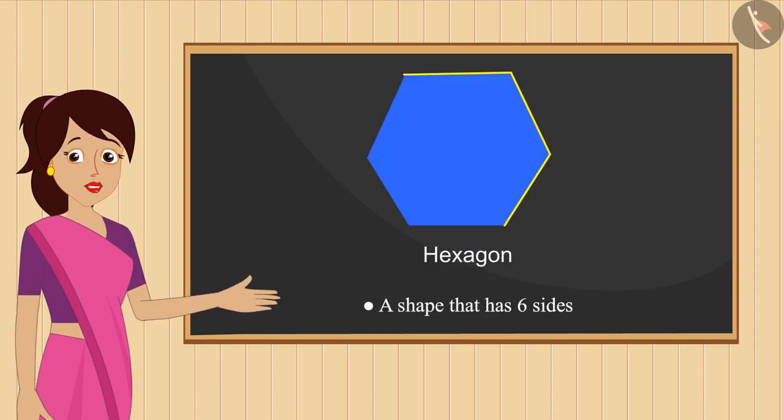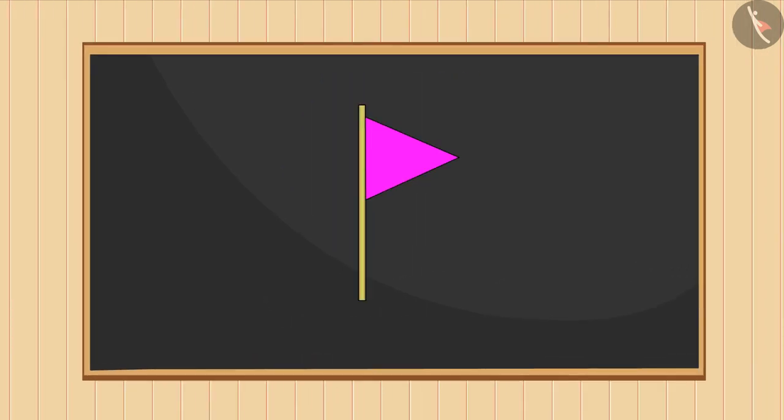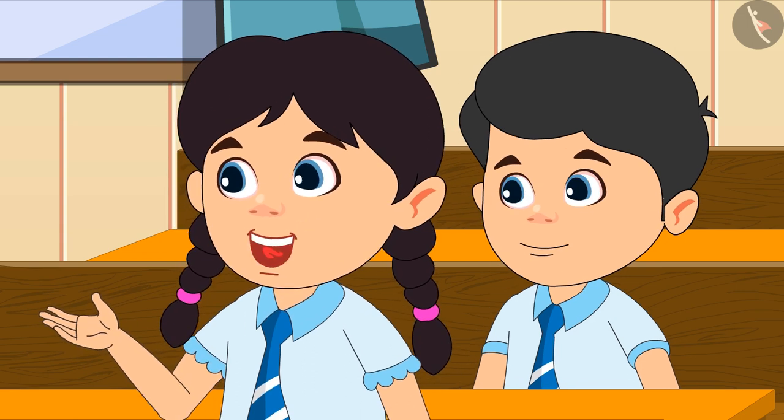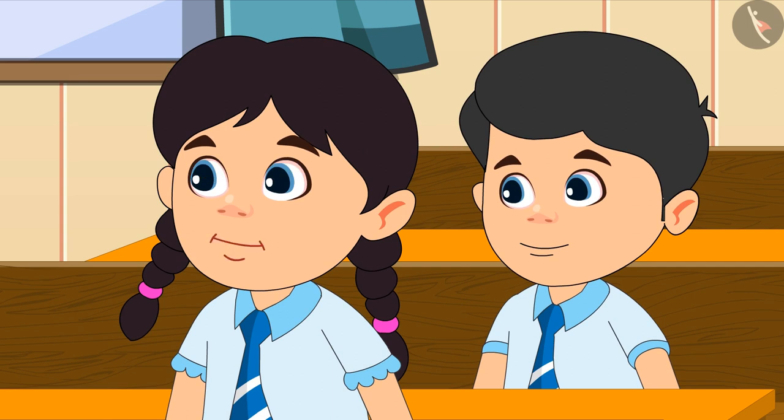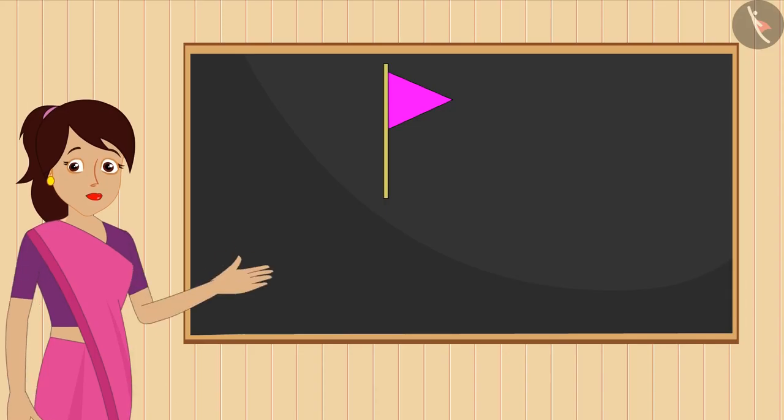Students, all of you must have seen such a flag. Yes teacher, I have seen such a flag in a fair. The shape of the cloth of this flag is like a triangle. You identified it right, Priya. Triangle is a shape that has three sides that are joined like this.